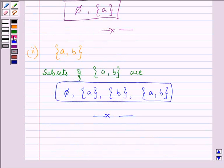Proceeding on further to the third part, we are given a set {1, 2, 3}. It is having three elements, so how many subsets will it have? 2 raised to the power 3, that will be eight subsets.